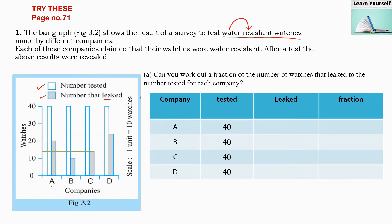I have made a table here. You can see that for companies A, B, C, D the watches tested for each company are the same — 40. The first question asks: can you work out the fraction of the number of watches that leaked to the number tested for each company? So we have to write the fraction: number of watches leaked over number of watches tested.